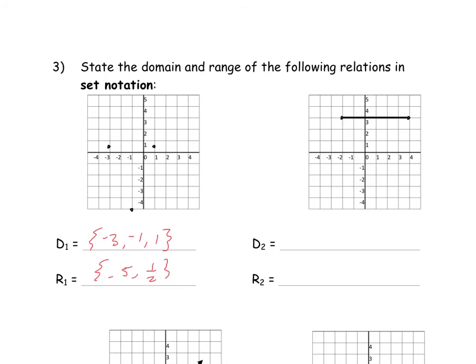In this one, there is a straight line from negative 2 to 4, and all points between are included. The domain is all values between negative 2 and 4, so: X is greater than or equal to negative 2 and less than or equal to 4. For the Y values, the only Y value that exists is 3 — there are no points above or below — so we simply state Y equals 3.